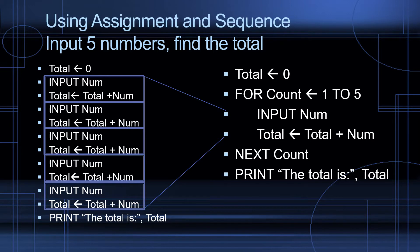For count. Count will be assigned from one to five. What statements do we want to repeat five times? These are the two statements. Input num, total equals total plus num. And we use the keywords next count to continue the loop for the five times. Once this loop has continued five times, we print the total is total.